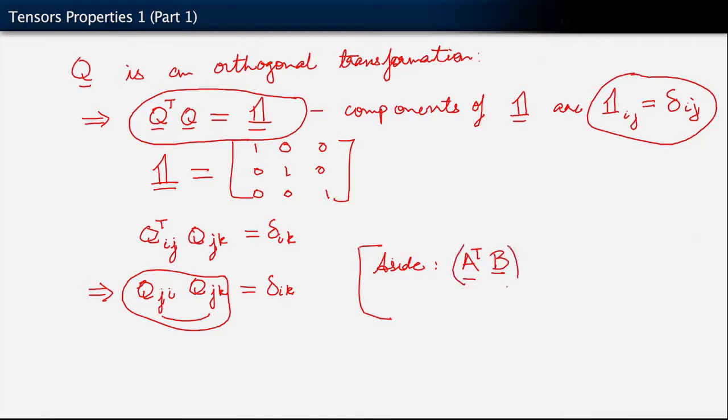And what we are considering here is a tensor product of the form a transpose b. And we want to ask ourselves, what are the i j components of this product? The way we will write this is a transpose_ik b_kj. And then recognizing the fact that we can write a transpose_ik as a_ki multiplying b_kj.